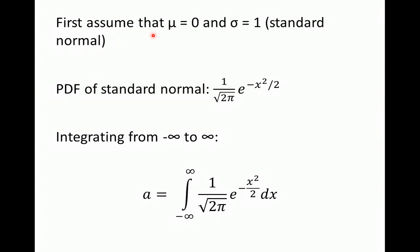First, let's make the function look simpler by assuming that the mean μ is 0 and the standard deviation σ is 1. That gives us our standard normal probability density function. So this is the PDF of a standard normal: μ=0, σ=1, which is why it looks simpler. Now we want to see what it equals when we integrate from negative infinity to infinity over the variable x.